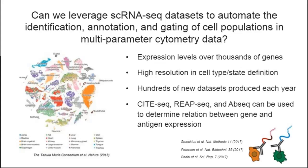These challenges motivate us to ask the following question: can we leverage existing single-cell RNA sequencing datasets to automate the identification, annotation, and gating of cell populations in multi-parameter cytometry data? In single-cell transcriptomic experiments, the expression level of thousands of genes is typically profiled in each cell, and therefore these datasets have very high resolution in cell-type and cell-state definition, allowing one to annotate cell populations very accurately based on their transcriptomes.